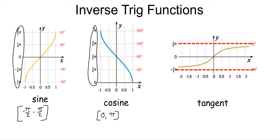We can take the tangent of any value we want — the domain is all real numbers. But it's always going to yield a value between negative pi over 2 and positive pi over 2, not inclusive, meaning the inverse tangent can never equal negative pi over 2 or positive pi over 2. That's because at pi over 2 and negative pi over 2, the tangent is undefined.